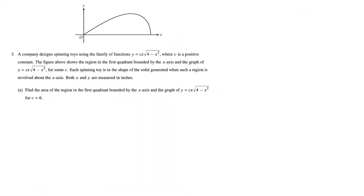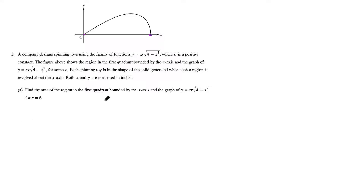Question (a) asks us to find the region in the first quadrant bounded by the x-axis and the graph. To do this, we need to find the points of intersection — where it's starting and where it's ending. It's clear that it starts where x equals 0, since that's the origin, so we just need to solve the equation for the other x-intercept.